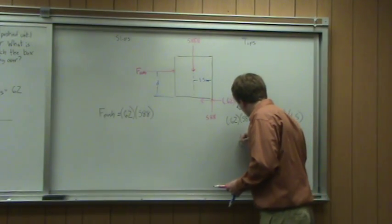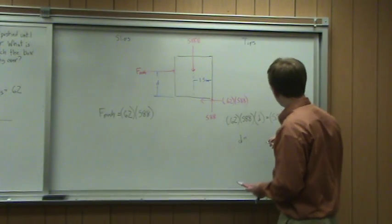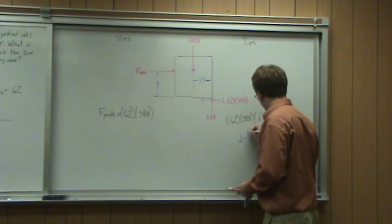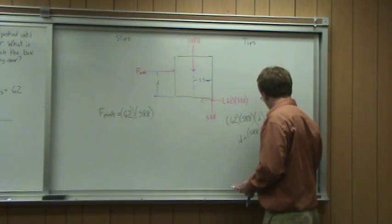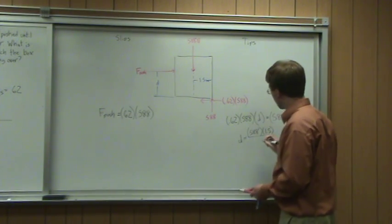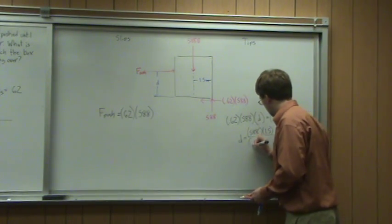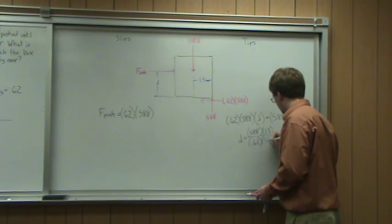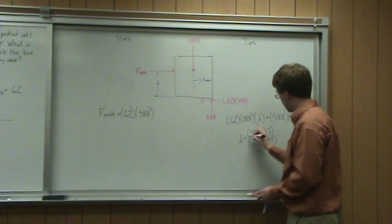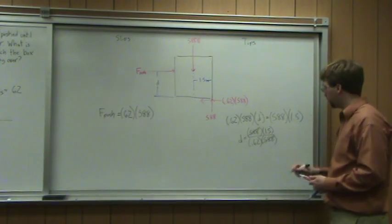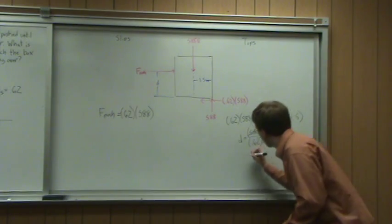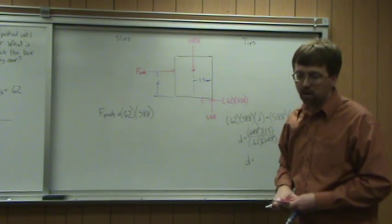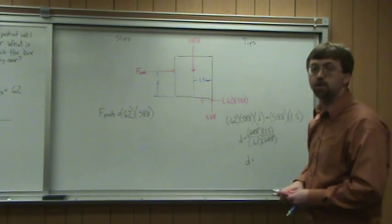And so D ends up being equal to 588 times 1.5 over 0.62 times 588. Those 588 will cancel each other out. 1.5 over 0.62. D will give me a final answer of 2.42.